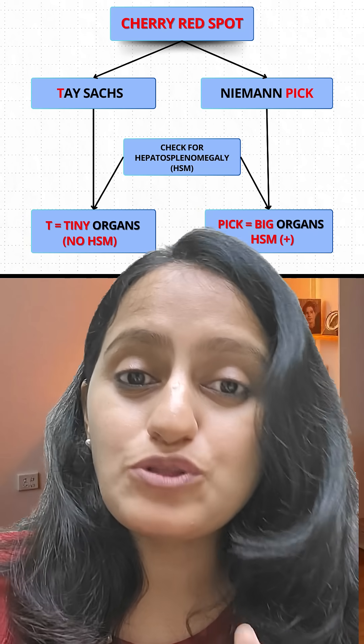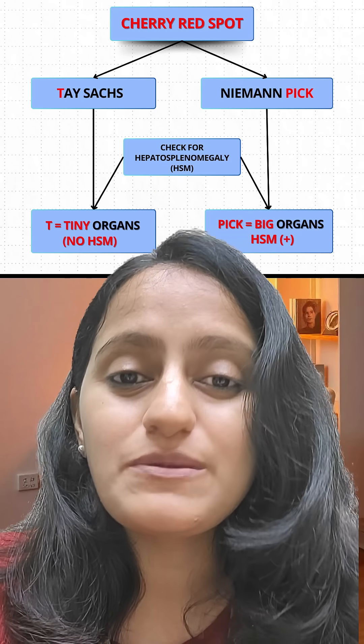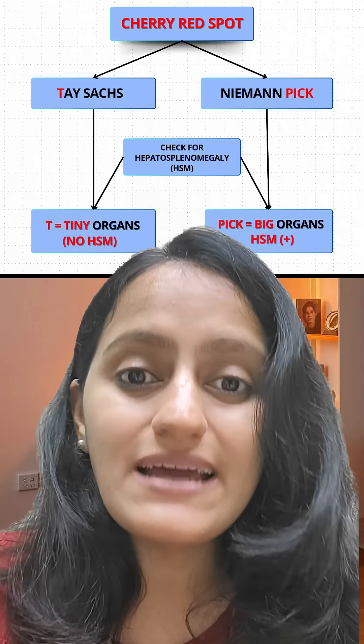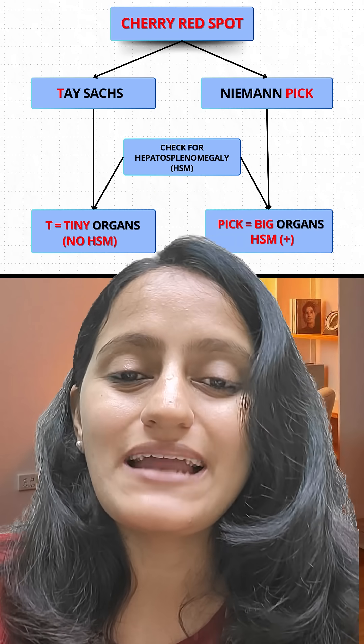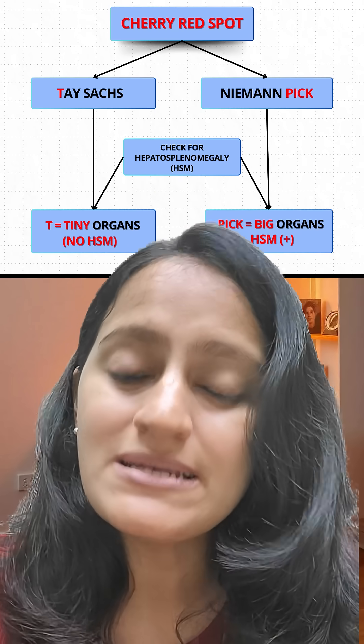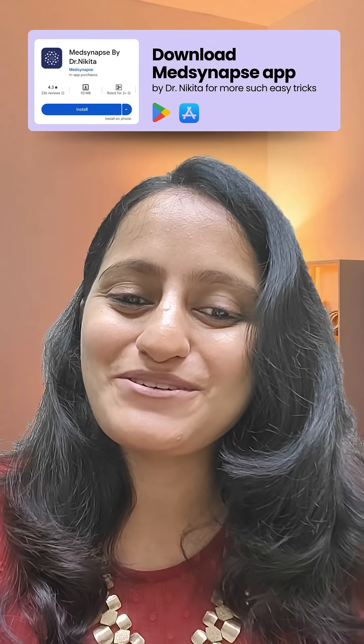So cherry red with no hepatosplenomegaly is Tay-Sachs, and cherry red with hepatosplenomegaly is Niemann-Pick. This was also one of the recent Niemann-Pick exam questions. Make sure you save this reel for further revision because this is very, very important. Thank you so much.